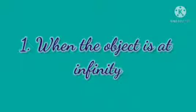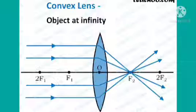First, when the object is very far, i.e. at infinity, then a real, inverted, diminished image is formed at the focus.